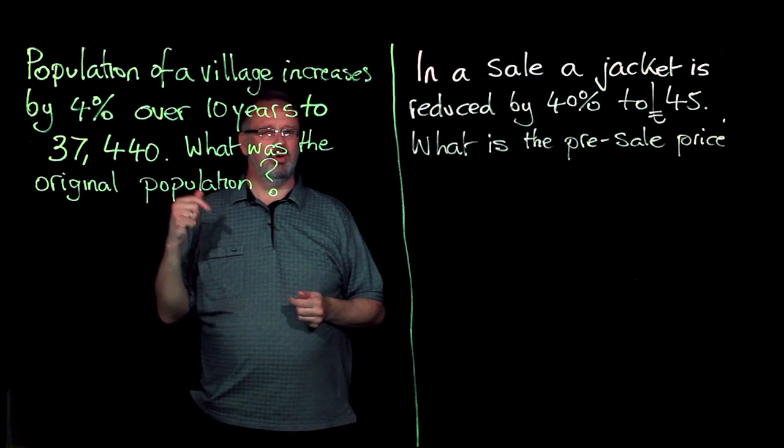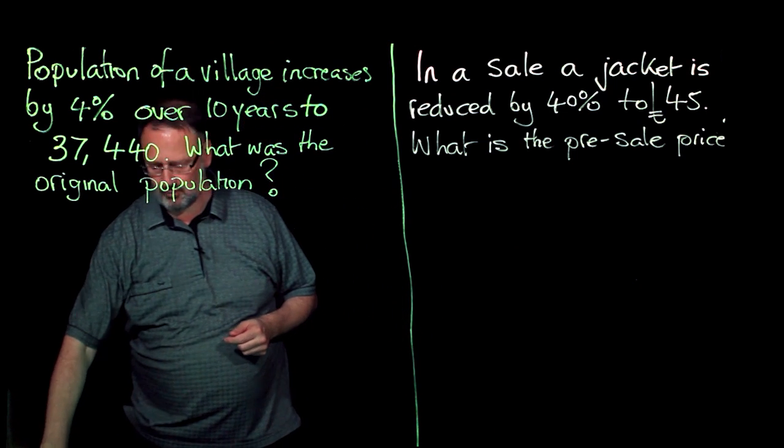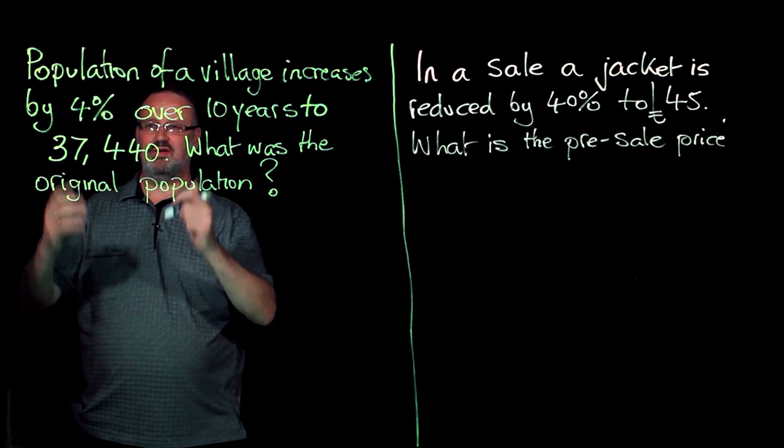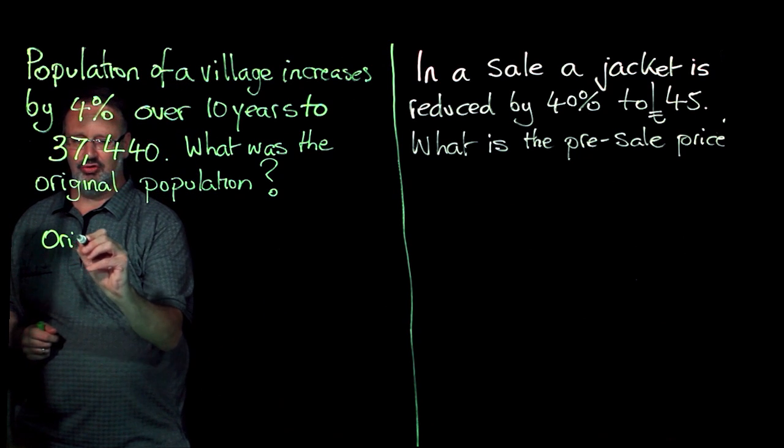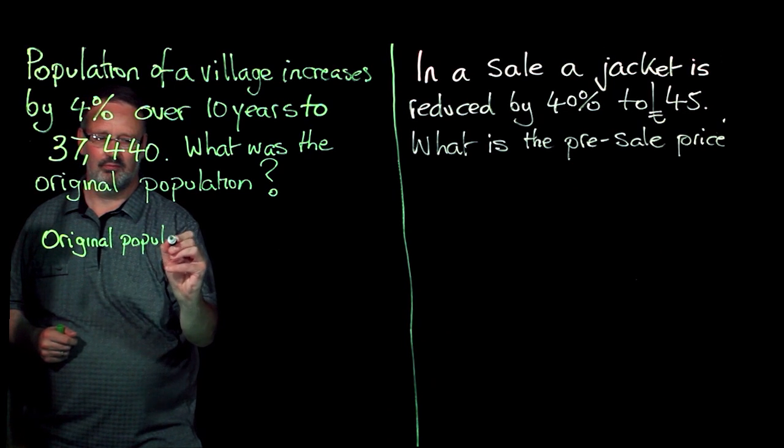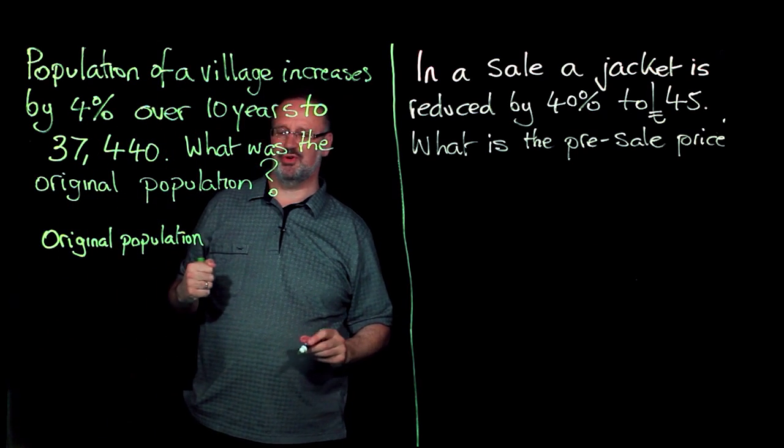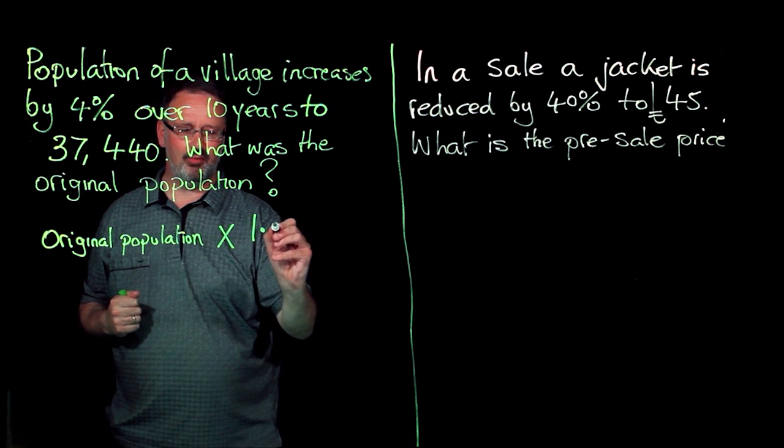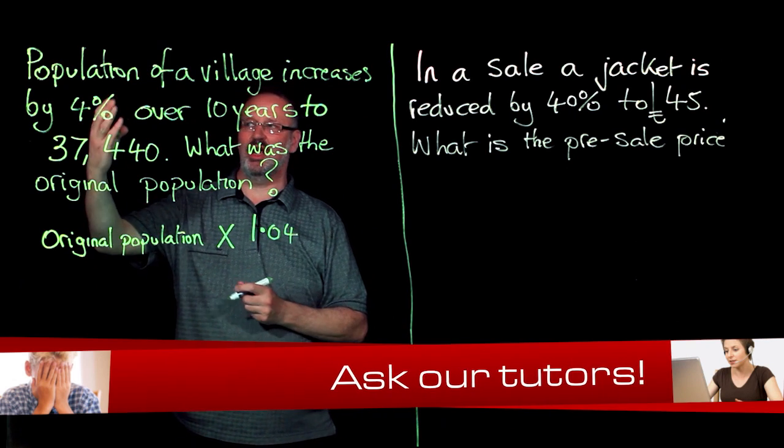We have introduced the concept of a multiplier. Perhaps that is our way ahead. So how did I get 37,440? Well, I have my original population. To increase it by 4%, I multiply it by the multiplier of 1.04.